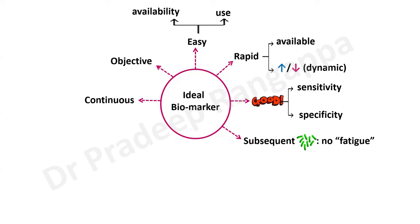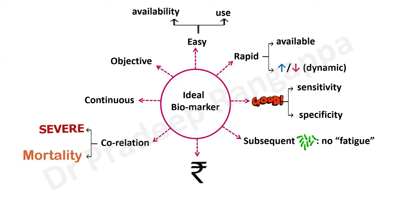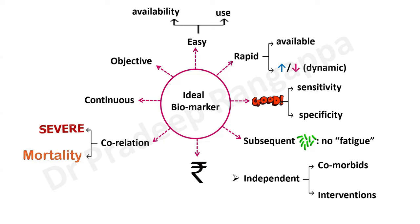The biomarker should reflect even in immunocompromised patients, correlate well with severity and mortality, and most importantly be cost-effective and affordable. Many biomarkers are dependent on coexisting comorbidities — for example, CRP cannot be relied upon in liver dysfunction. Biomarkers should not be influenced by coexisting comorbid problems, and should not be interfered with by any interventions other than antibiotic use. These are the typical characteristics of an ideal biomarker.